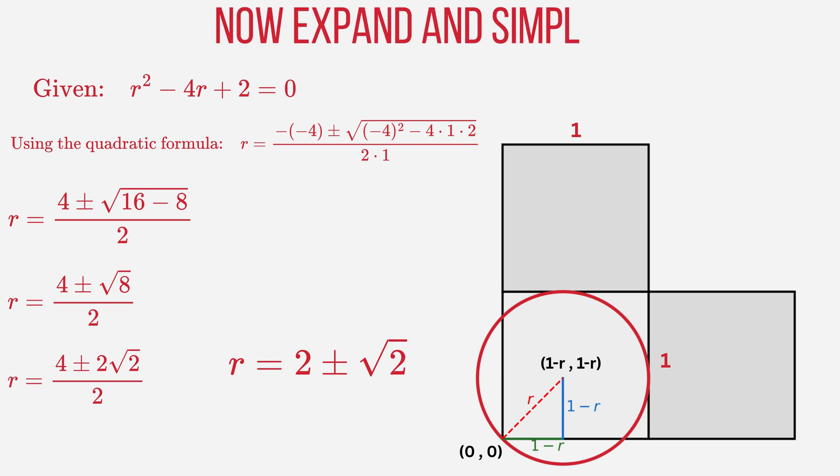We're now left with a neat quadratic equation. Using the quadratic formula, we solve for R. After simplifying, we get two possible answers: 2 plus root 2 and 2 minus root 2.